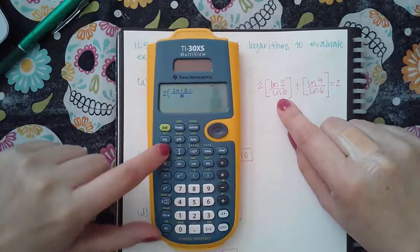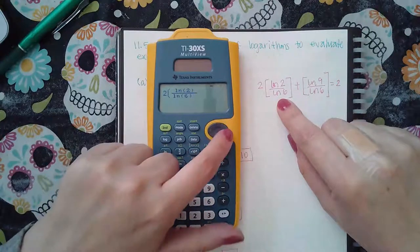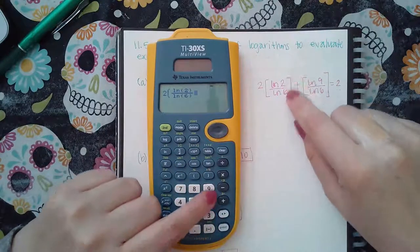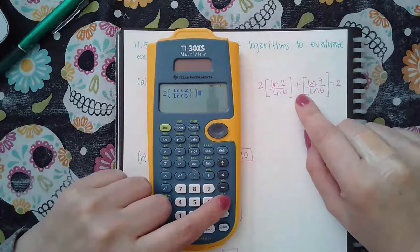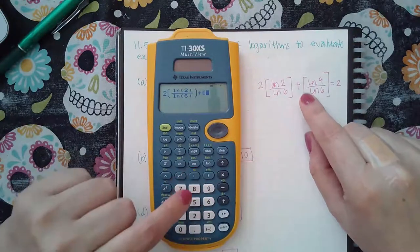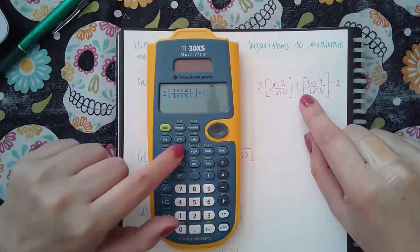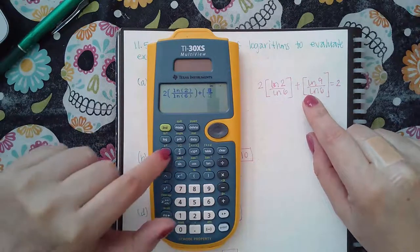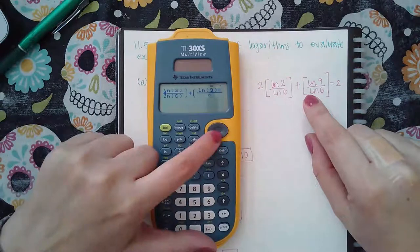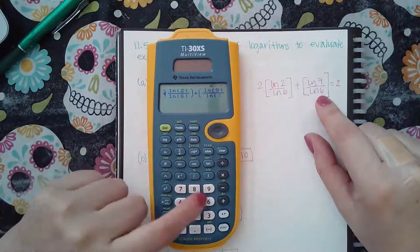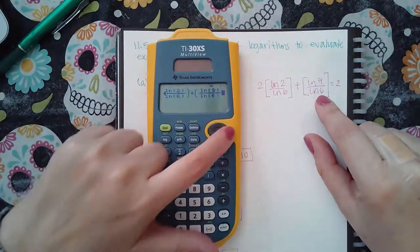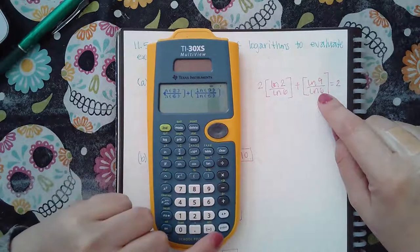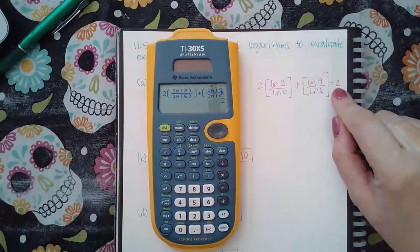Went downstairs, ln of six, closed the argument. Then I went off the side and put a parentheses to close that bracket. Put the plus sign, open a parentheses for the bracket, then a fraction. Put ln of nine, close the argument, go down, ln of six, close the argument, go to the side and close that big bracket. Hit enter and it tells me the answer's two.